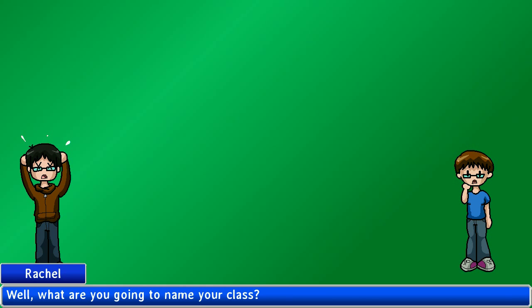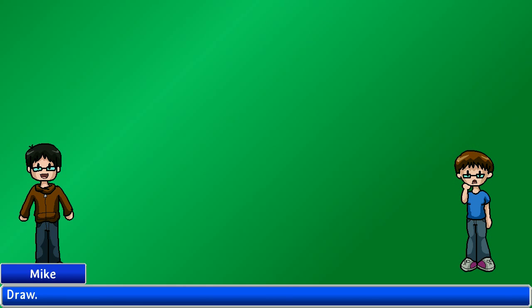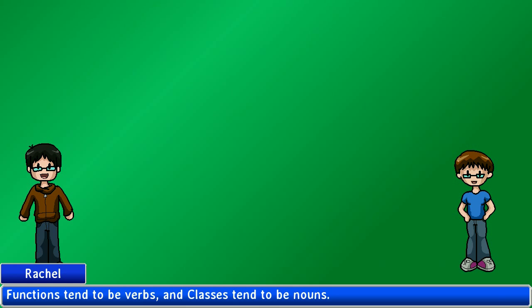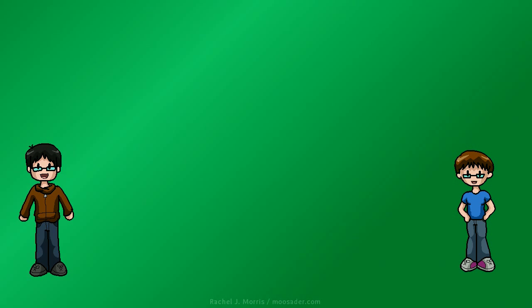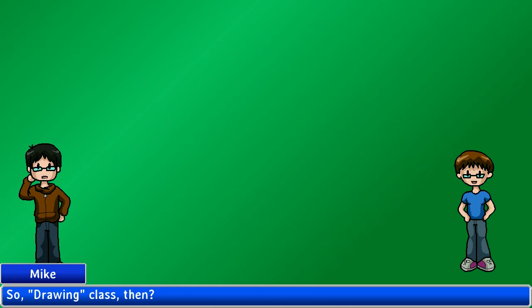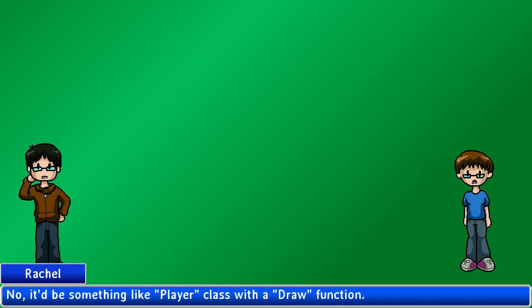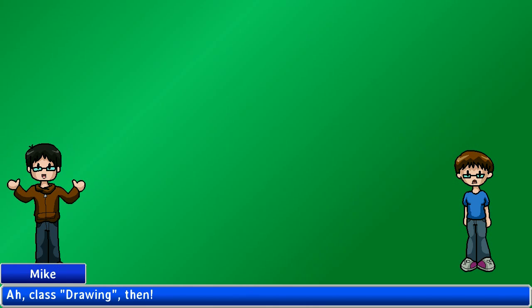Well, what are you going to name your class? Draw? That's more of a function name. Functions tend to be verbs and classes tend to be nouns. Draw is a verb. So, drawing class then? No, it'd be something more like a player class with a draw function. Class drawing then?